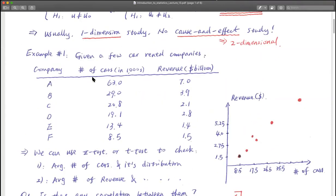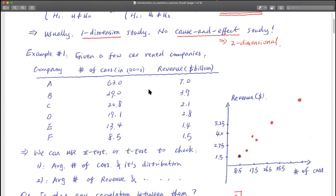We consider some car rental companies. We have A, B, C, D, E, F — six companies — and the corresponding number of cars each has. Company A has 63,000 cars with revenue of $7 billion, and so on. Based on what we've learned so far, we can calculate the average number of cars or average revenue, do confidence intervals, or do hypothesis testing. But if we want to study any relationship between number of cars and revenue, we haven't done that yet.